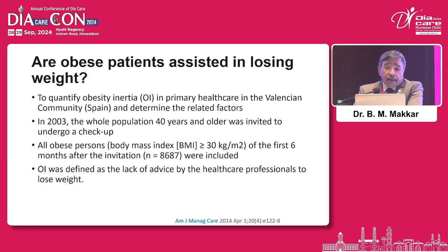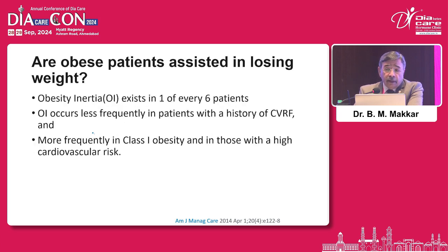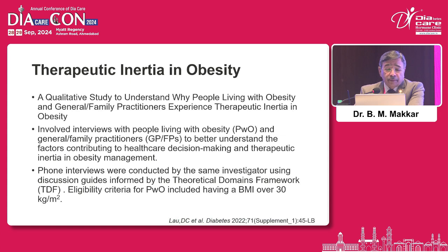Are these people being assisted in losing weight? A recently published study looked at the local population of Spain to quantify obesity inertia in primary health care in the Valencian population. The study was primarily designed to look at cardiovascular risk factors. Participants 40 years and older who had been recruited for more than six months were invited. Obesity inertia existed in one in every six persons in this study, in a population already having cardiovascular risk.